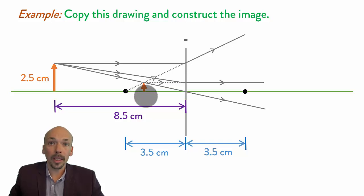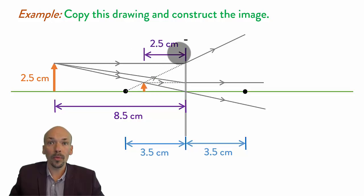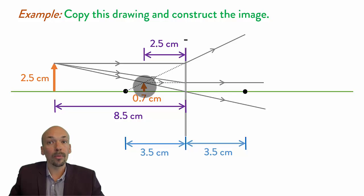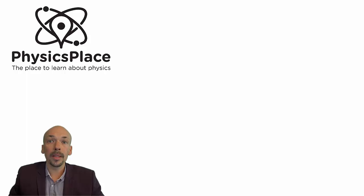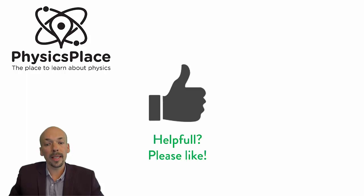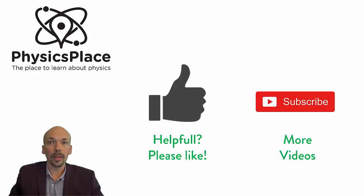If you want to check if you did it correctly, this should be roughly 2.5 centimeters away from the lens, and this would have roughly a height of 0.7 centimeters. That's it. You should now know how to draw an image with a diverging lens. If you found this video helpful, please let me know by liking and subscribe for more videos. Thanks for watching.